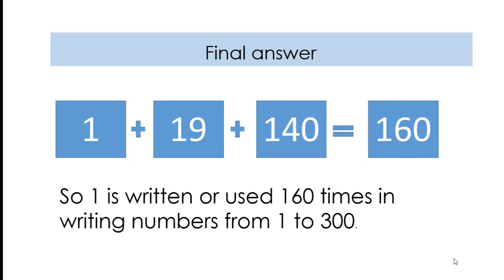Our final answer: from Part 1 the answer is 1, from Part 2 the answer is 19, and from Part 3 the answer is 140. Adding all together: 1 + 19 + 140 = 160. So the digit 1 is written 160 times in writing the numbers from 1 to 300.